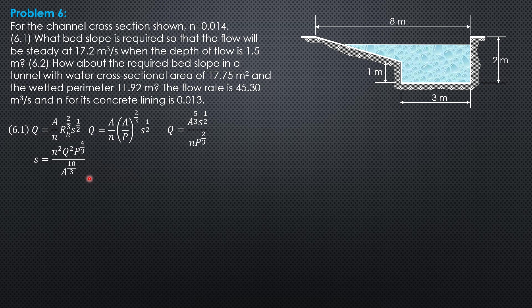Let's compute for area and wetted perimeter. So the depth of flow is 1.5. Therefore this is 0.5 meter, 1.5 minus 1. So 0.5 and we will call this portion of the length as X.